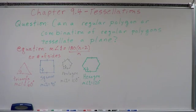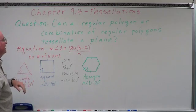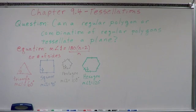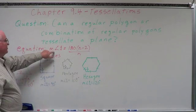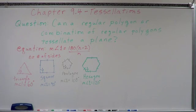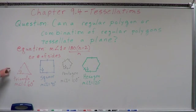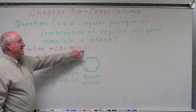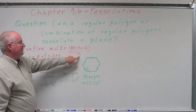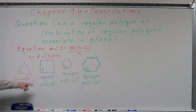A key question is: what kind of figures can we use to tessellate a plane? Can a regular polygon or combination of regular polygons tessellate a plane? We have an equation: the measure of one interior angle equals 180 times the quantity (n minus 2), all divided by n, where n is the number of sides. For a regular triangle: 180 times (3 minus 2) divided by 3 equals 180 divided by 3, which is 60 degrees.